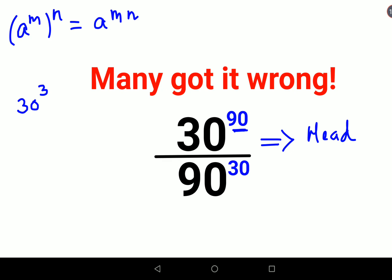Eventually the product will get us 90, right? So let's try and put this in our question. We'll get 30 raised to 3 the whole raised to 30 upon 90 raised to 30.